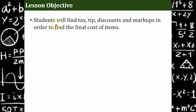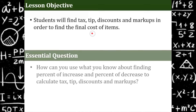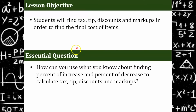Our objective today is that you're going to find tax, tip, discounts, and markup in order to find the final cost of items. This is a really important life skill to have, and you won't always have your mom and dad around to help you. The question I want you thinking about as we proceed through the lesson today is: how can you use what you already know about finding percent of increase and percent of decrease to calculate these real world examples of tax, tip, discounts, and markups?